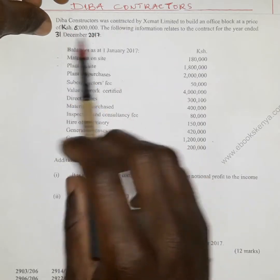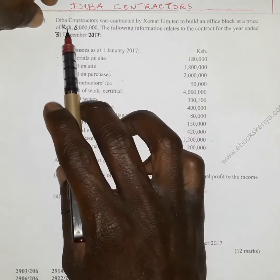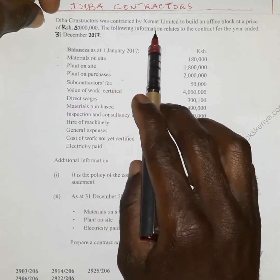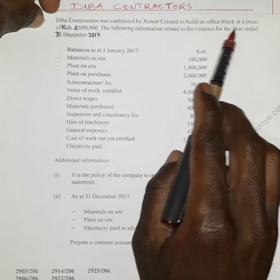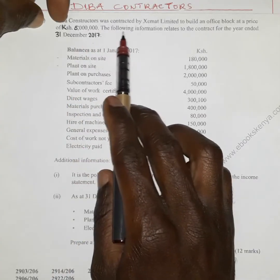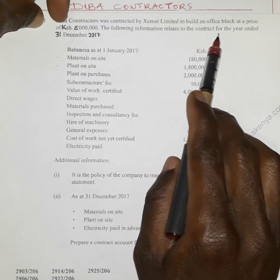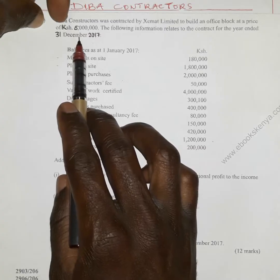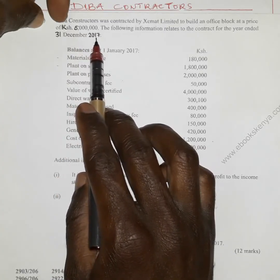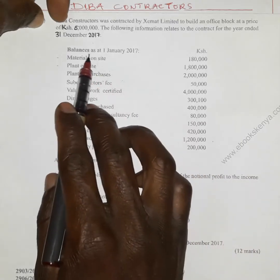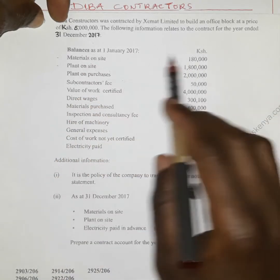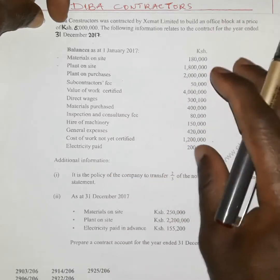The question given states that Deeper Contractors was contracted by ZMAT Limited to build an office block at a price of 6 million. The following information relates to the contract for the year ending 31st December 2017, with opening balances as at 1st January 2017.